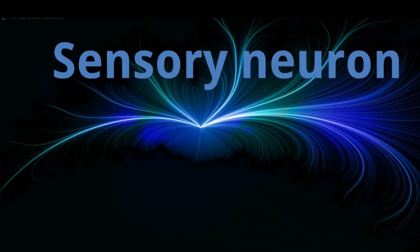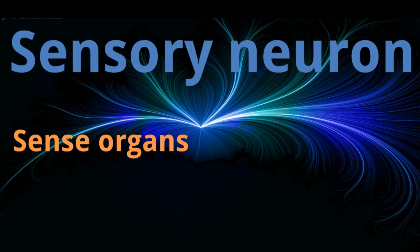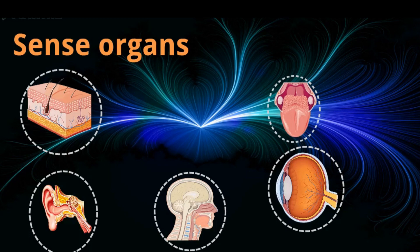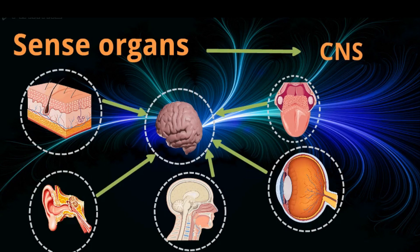Sensory neurons carry nerve impulses from sense organs, skin, ears, nose, eyes, tongue, etc., to the central nervous system.